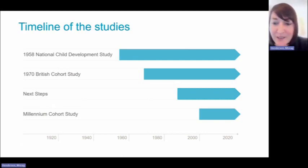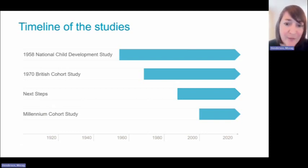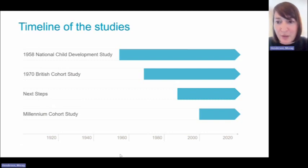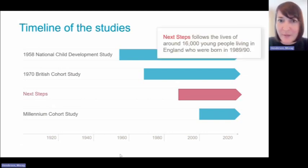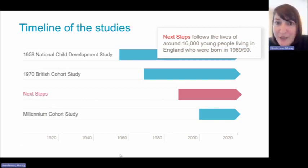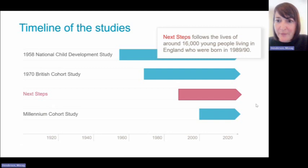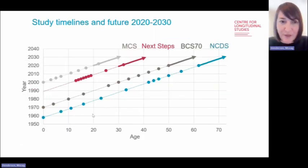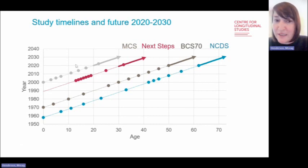There's the 1970 BCS, or British Cohort Study, again born in the same week in Great Britain, with around 17,000 participants. Next Steps is obviously the focus for today, and the fourth study is the Millennium Cohort Study, born in the UK between 2000 and 2002, with around 19,000 participants. Next Steps follows the lives of around 16,000 young people who were living in England attending secondary school, born across the years 1989 to 1990, and we now have nine sweeps of data, clustered during adolescence with a sweep at age 25 and the most recent at age 32.